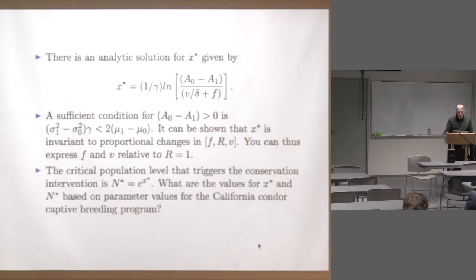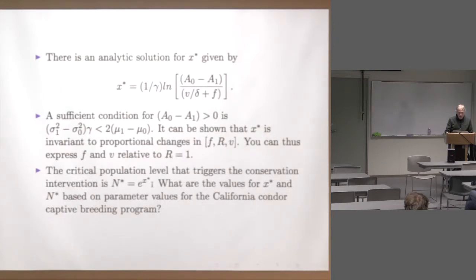The critical population level that triggers conservation intervention is N* = e^(x*). The question then is: what are the values for x* and N* based on parameter values for the California condor captive breeding program?